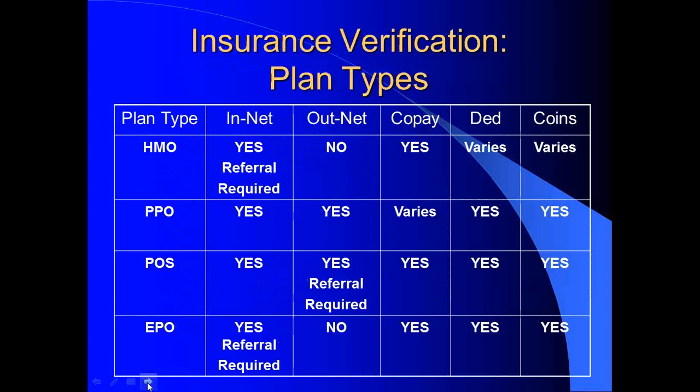To obtain the correct benefit information, you need to be familiar with the types of plans out there. These are going to grow in number as changes pile on, but these four are most common. For the HMO, it's important to note that it requires a contract, so even if you're in-network you may not be participating with a specific HMO. In-network facilities need to know who they're participating with, how claims are filed, and what the contract requirements are. For HMO, referrals and authorizations are required for everything, and care should be coordinated through the primary care physician elected at enrollment.